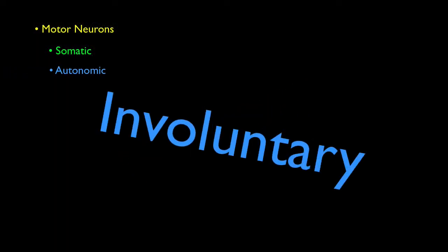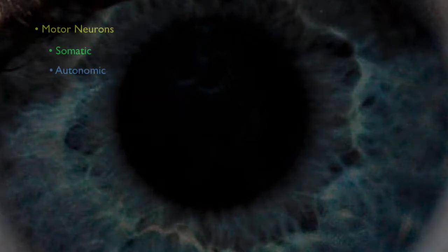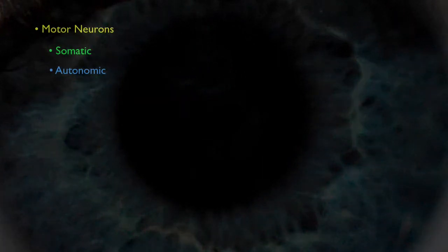Autonomic motor neurons are involuntary, which means you don't have to think about it. When we look closely, we find that the autonomic nervous system is also divided into two parts: the sympathetic and the parasympathetic.